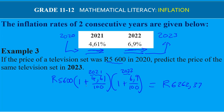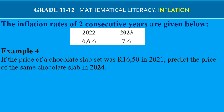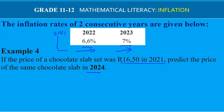The next example also has inflation rates for two consecutive years: 6.6% for 2022 and 7% for 2023. The price of a chocolate slab was R16.50 in 2021. We need to predict the price of the same chocolate slab in 2024, factoring in inflation for 2022 and 2023.